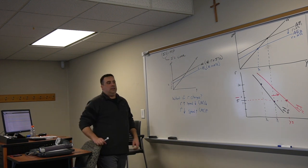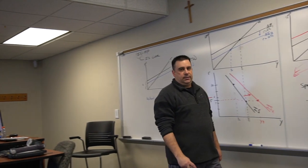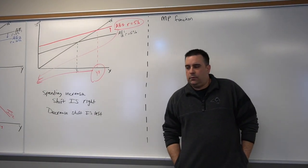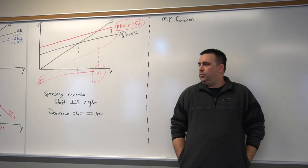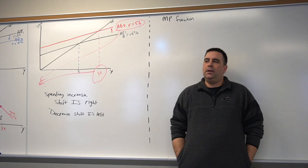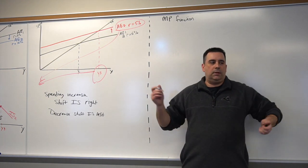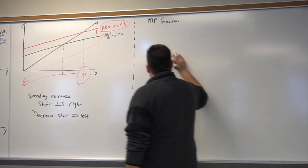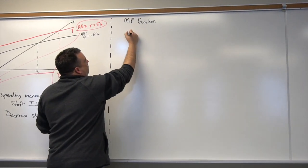That lead to money market equilibrium. All combinations of real GDP amounts and interest rates that lead to money market equilibrium. So recall the money market.